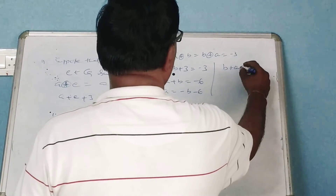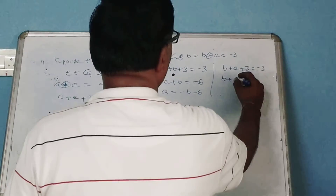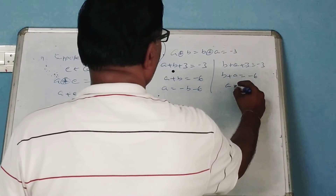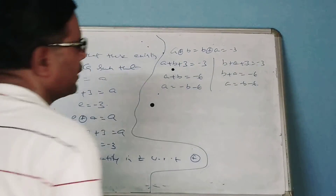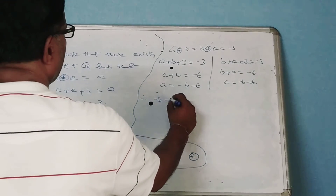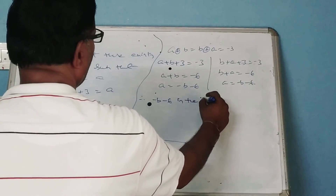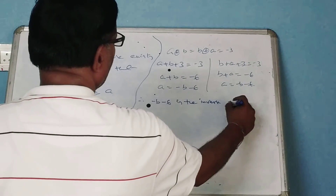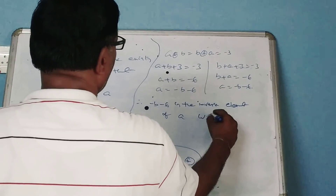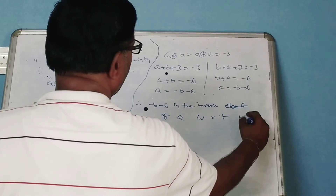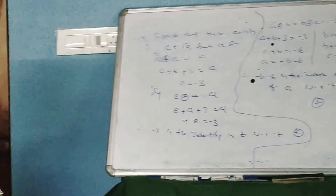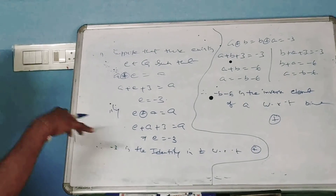Therefore B is equal to minus A minus 6. So minus A minus 6 is the inverse element of A with respect to the binary operation circular-plus. This is called the inverse element.